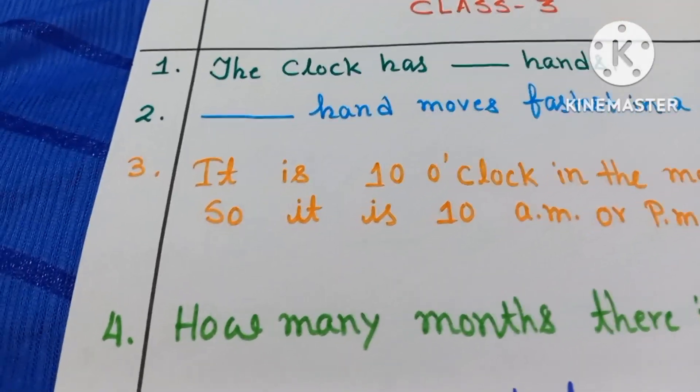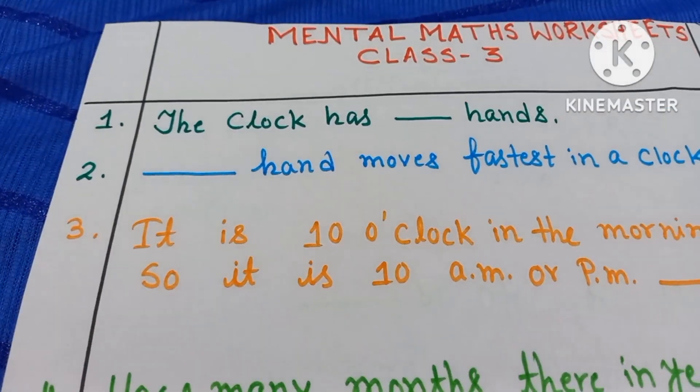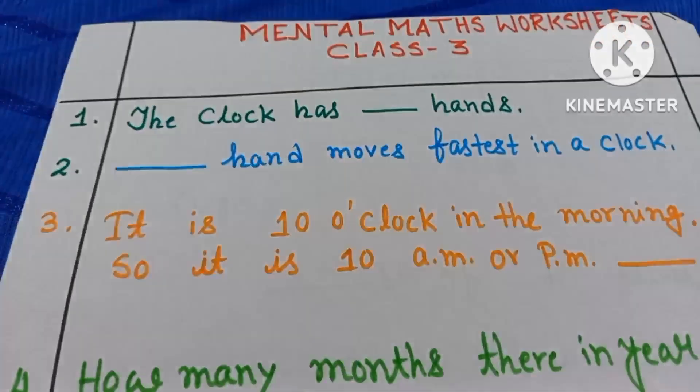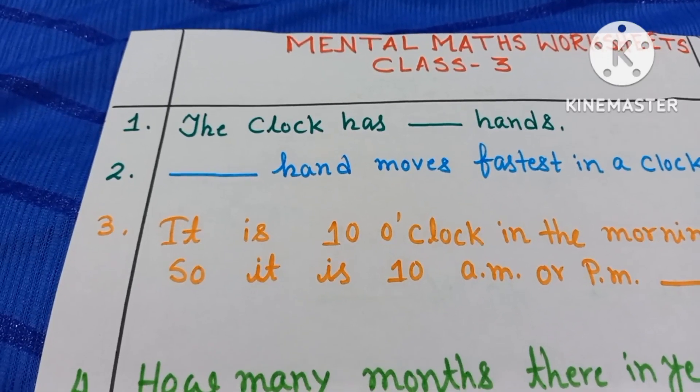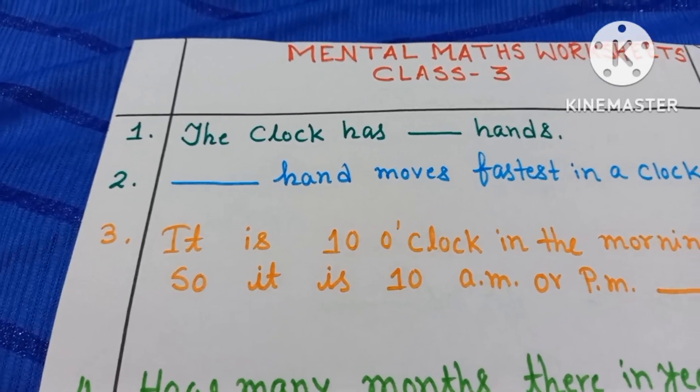Number 2. Dash hand moves fastest in a clock. Yes, you were right. Second hand moves very fast.